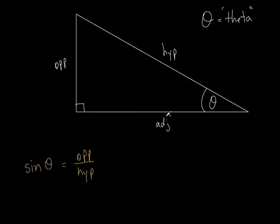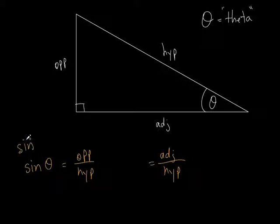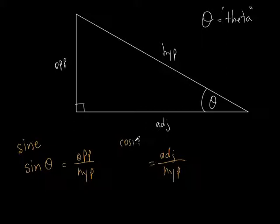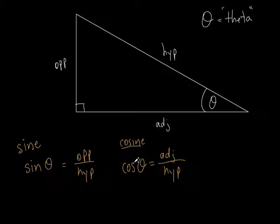Let's do another ratio — let's compare the adjacent side to the hypotenuse. That has its own special name: the cosine. We abbreviate it C-O-S, but the actual word is cosine. We never say 'cos' — we say 'cosine of the angle.' So the cosine equals adjacent over hypotenuse. That's the second trig function.